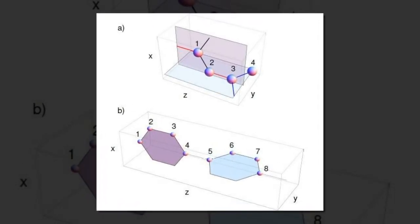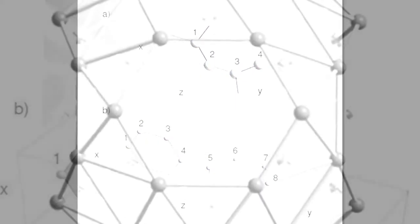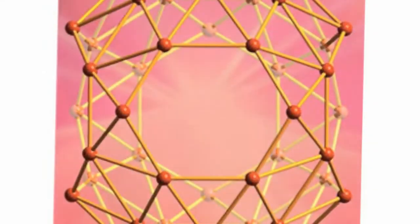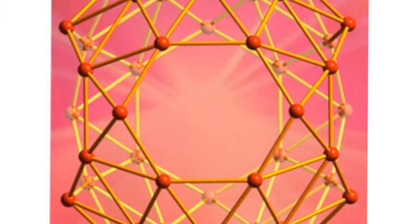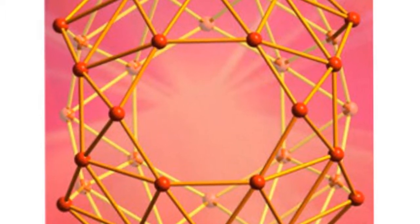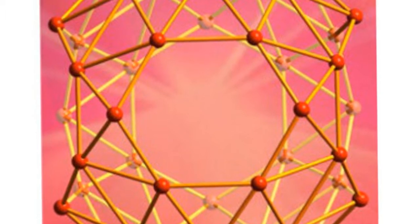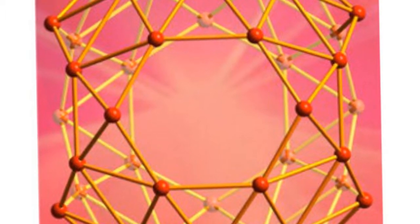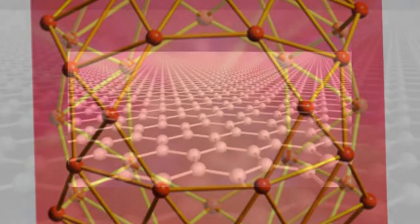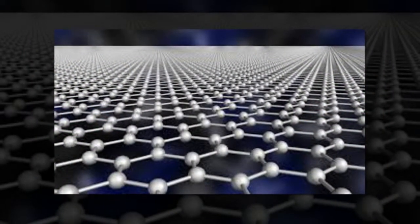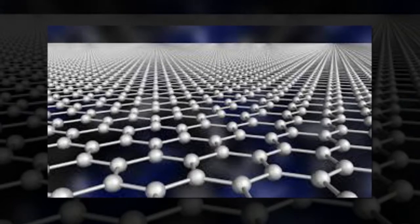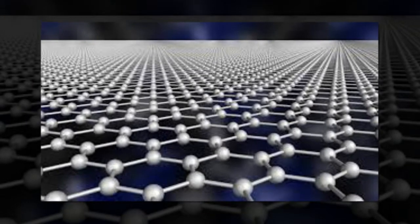Graphene is often described as having a honeycomb or chicken wire structure because it consists of carbon atoms arranged in a single layer thick hexagonal lattice. In this 2D structure, every carbon atom is connected to three other carbon atoms. The resulting planar trigonal connectivity contributes to graphene's unique properties, in particular its electrical properties that make it an excellent semiconductor.